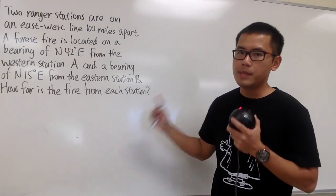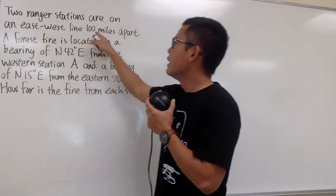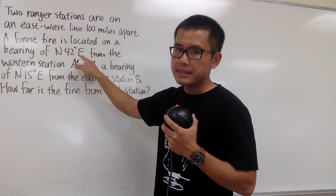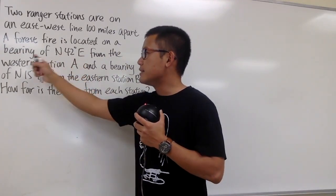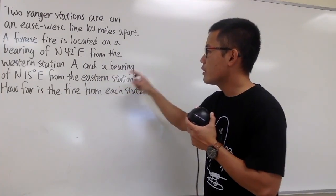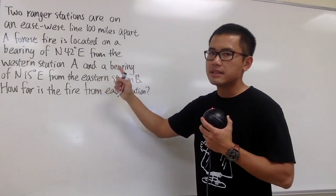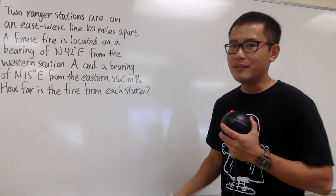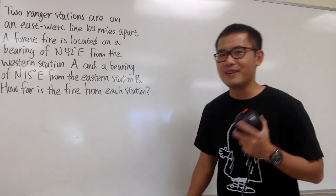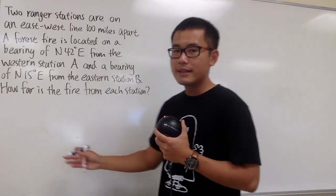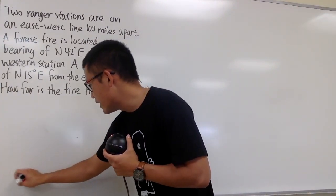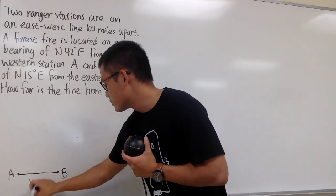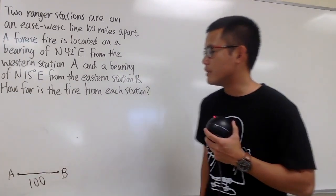Now let's solve the second application problem involving bearing. Two ranger stations are on an east-west line, 100 miles apart. A fire is located at a bearing of north 42 degrees east from station A, which is on the west side, and at a bearing of north 15 degrees east from station B on the east side. We want to know how far the fire is from each station. Let's draw station A on the left and station B 100 miles to the right.